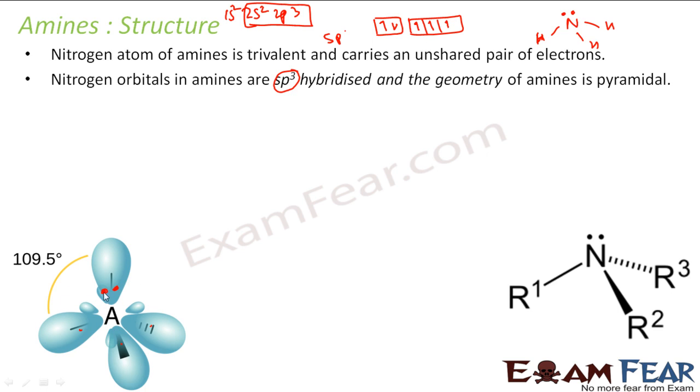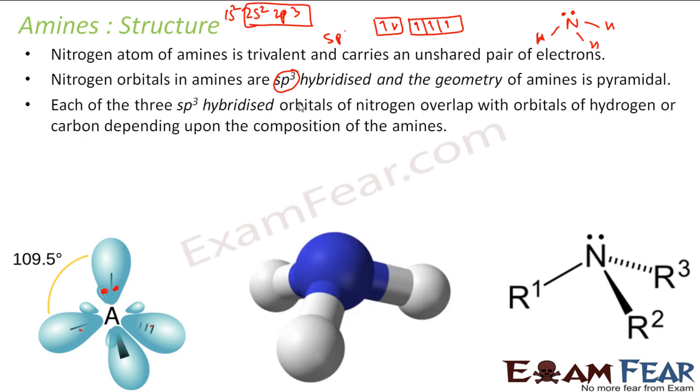You see ammonia also, it has similar sp3 hybridized orbital. So they are tetrahedral. Sorry, this is pyramidal. Why pyramidal? Because this part is not there actually. This is a lone pair of electron. This part is not there. So this is pyramidal.